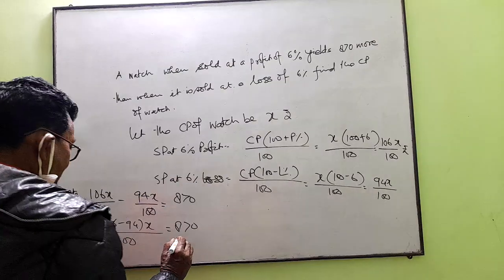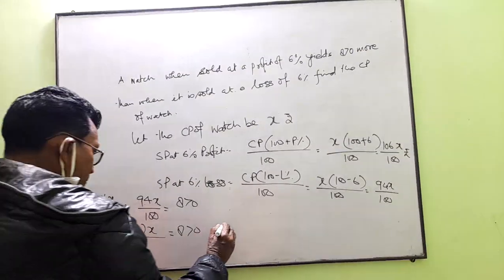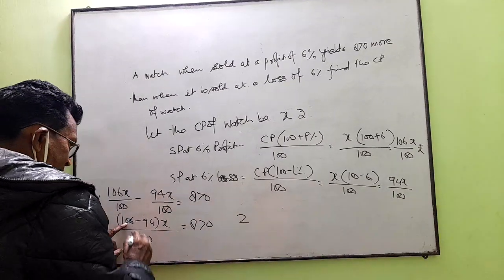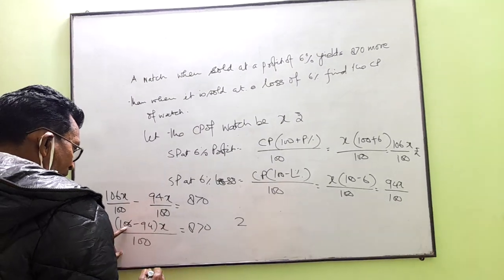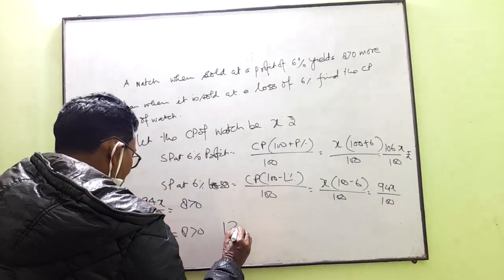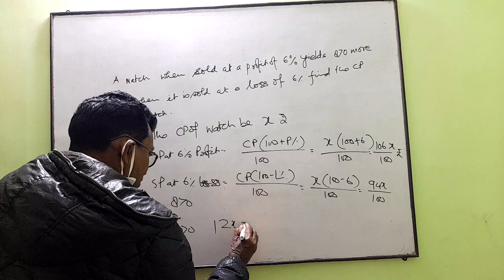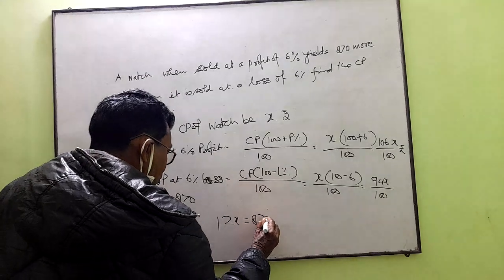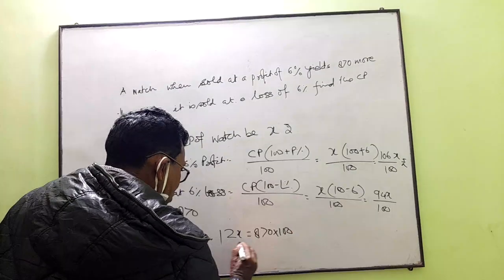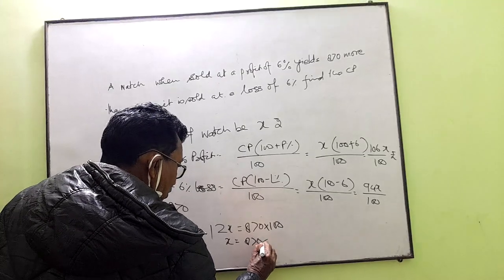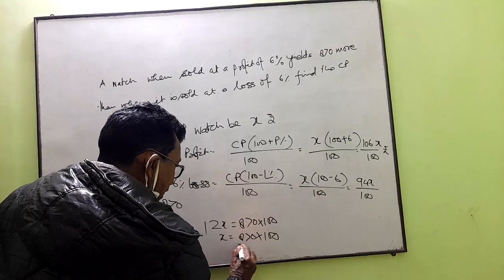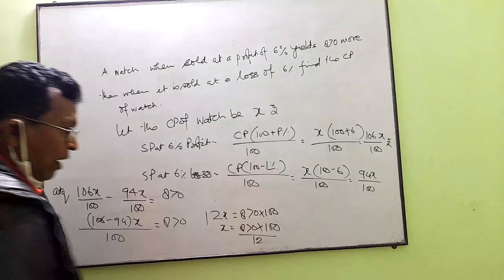12x is equal to 870 into 100, so x is equal to 870 into 100 divided by 12.